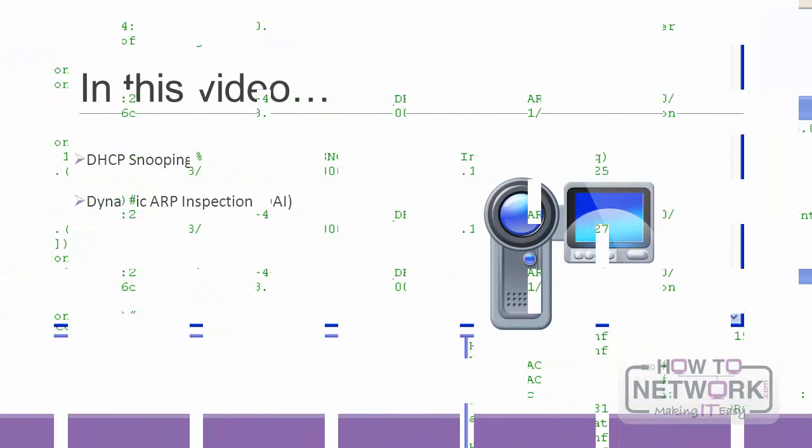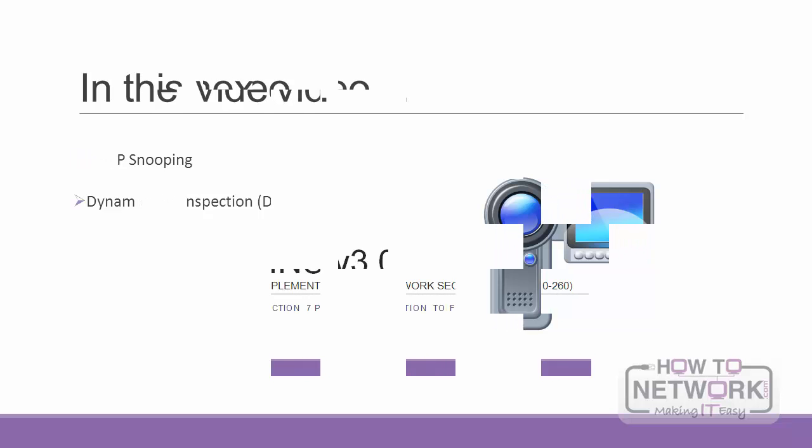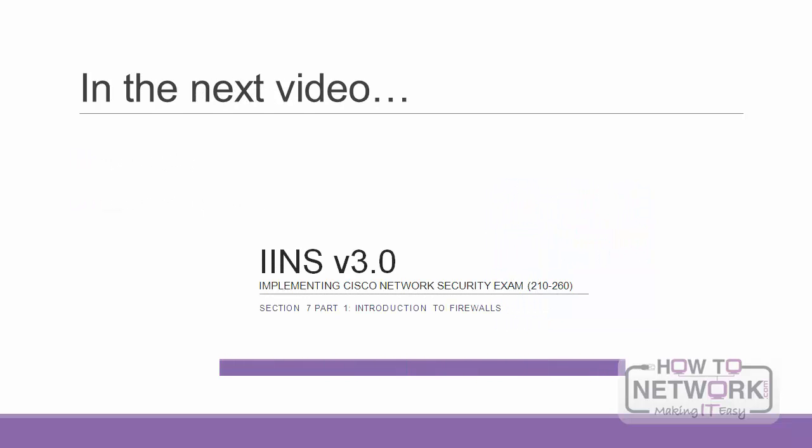In this video, we have described rogue DHCP servers and ARP spoofing — two attacks that can be defeated using DHCP snooping and dynamic ARP inspection. We have also seen how to configure both DHCP snooping and dynamic ARP inspection. I hope you found this video informative and I look forward to the next one.